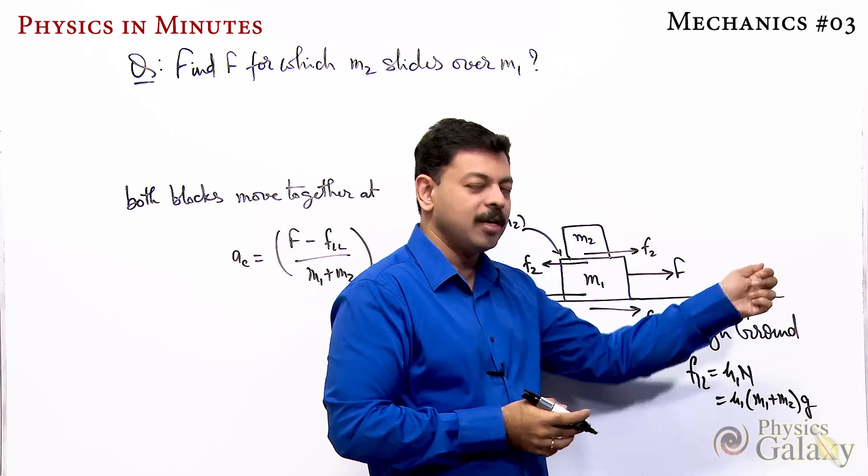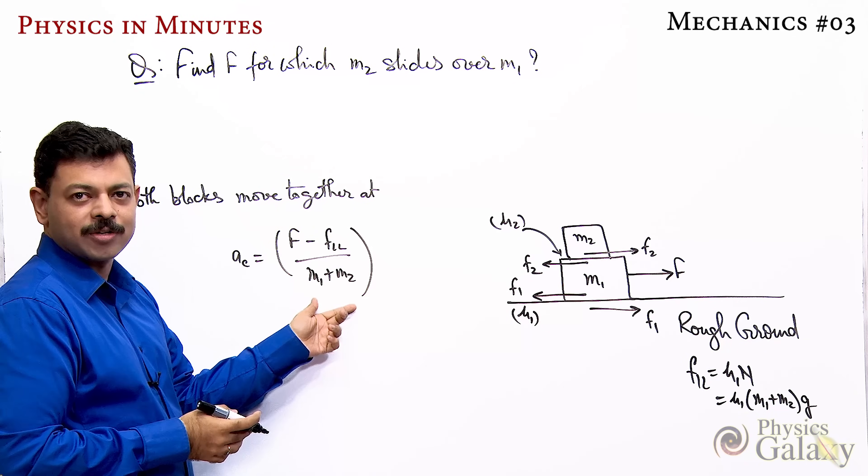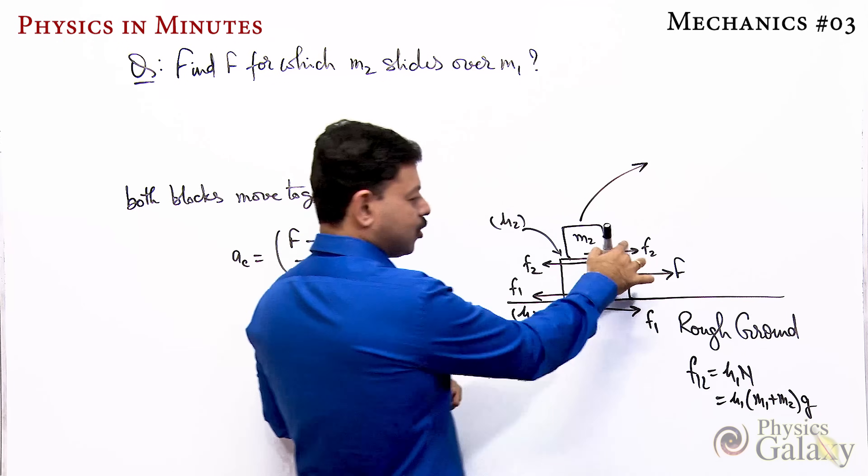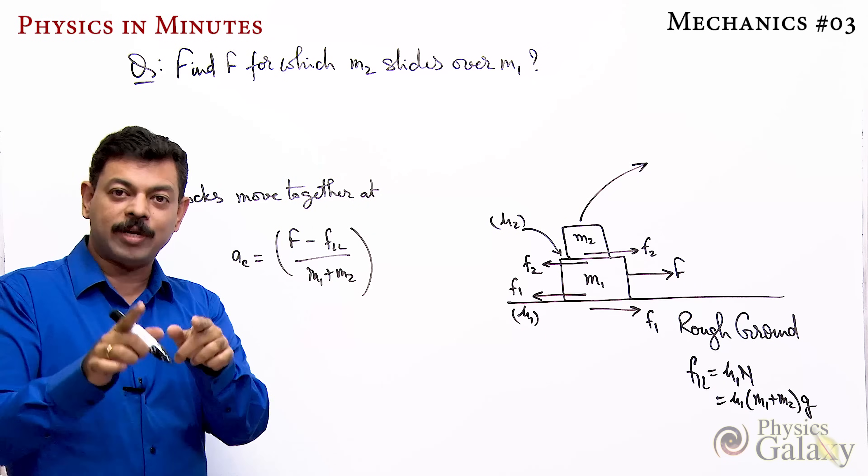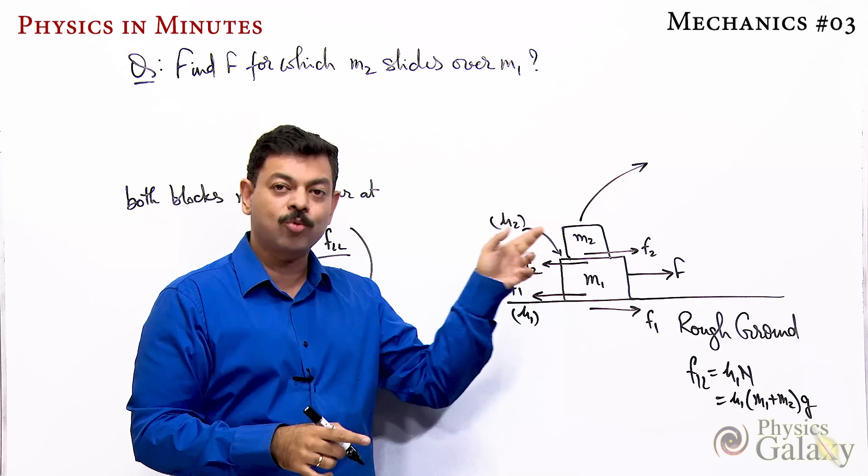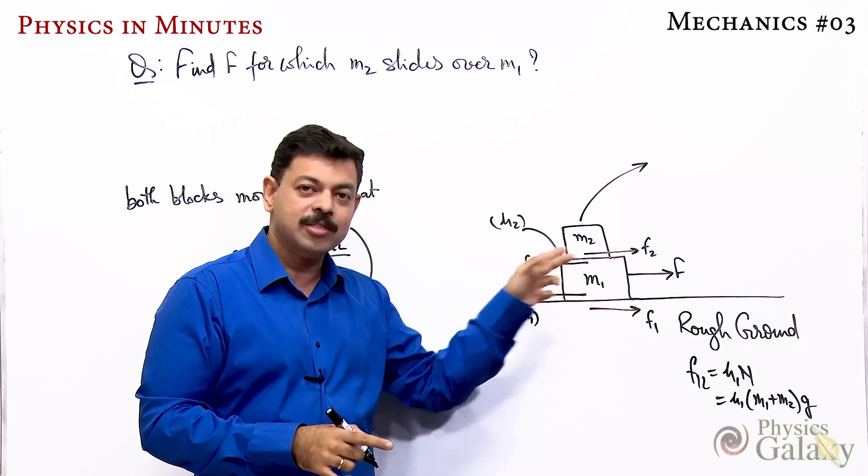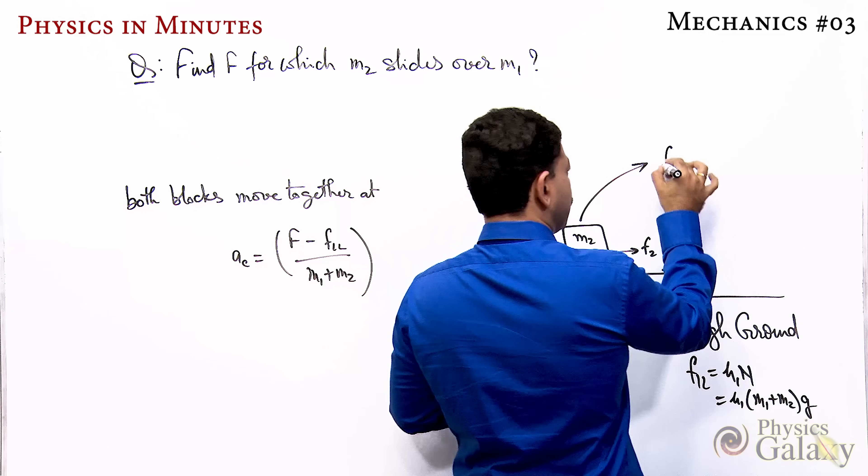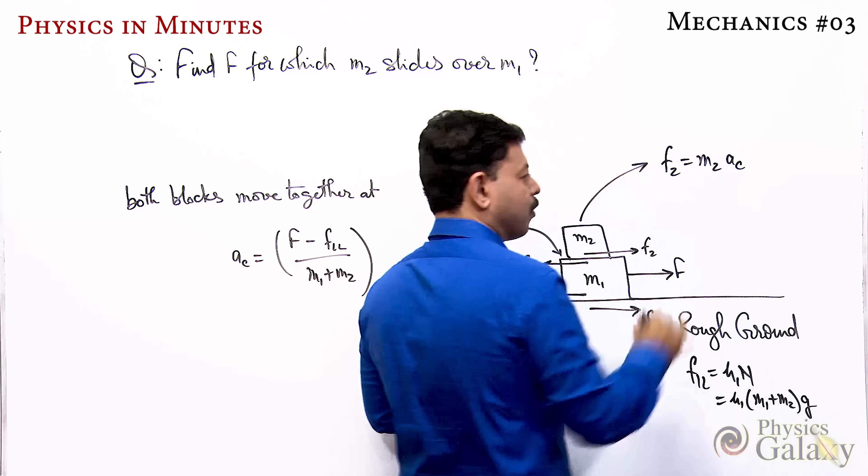When f1 reaches limiting value, F will start to drag this with this acceleration. Now considering only m2, who is pulling m2? Friction between m1 and m2. We've already discussed if this was smooth, m2 wouldn't move. m2 is now moving with this because of f2. So the only force on m2 is f2. We can write f2 equals m2 times common acceleration.